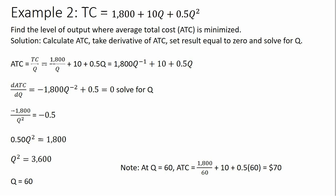In another example, we have a total cost equation and we want to find where average total cost is minimized. The first thing we need to do is get our average total cost equation, which I do by dividing total cost through by q. So 1800 divided by q, 10q divided by q just leaves us 10, and so on. I'm going to follow the rules of exponents and move the q in the denominator into the numerator, which makes the next step easier because I can avoid the quotient rule when taking the derivative.